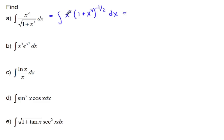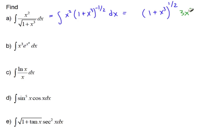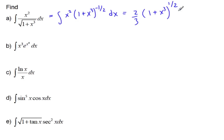We see that we have x squared here. For (1 + x³), adding one to the exponent gives one-half. When I take this derivative, a half comes down, and I'll also have 3x² come out. I don't want this three-halves, so I'm going to counteract this with two-thirds, plus C.